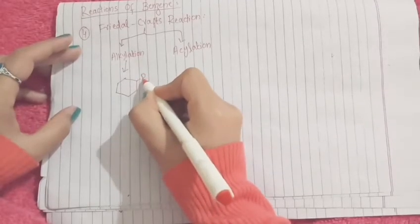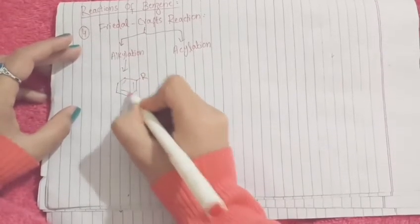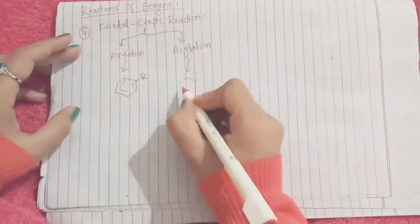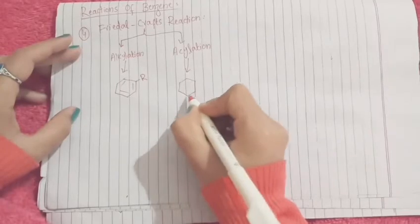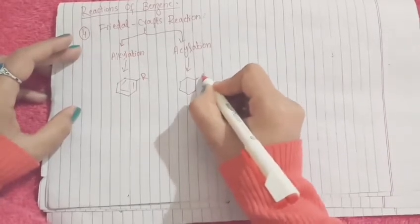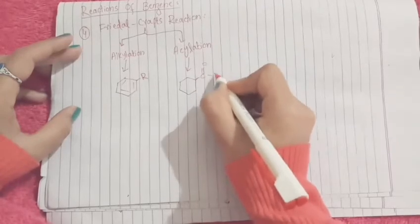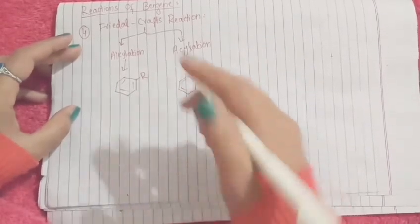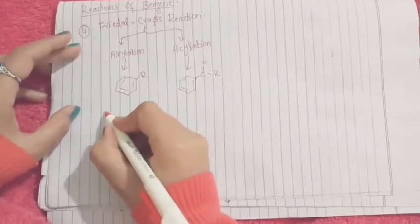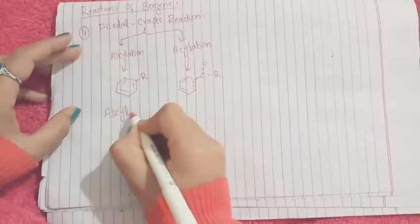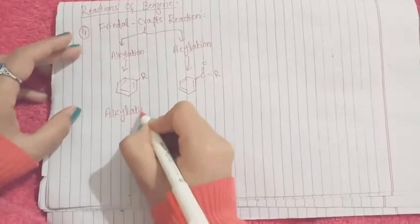In acylation, we get acylated benzene, or simply we introduce an acyl group into the benzene ring. Now I'll discuss the mechanism of how we do alkylation or acylation of the benzene ring.